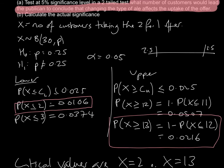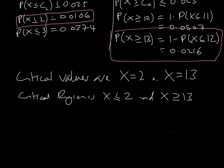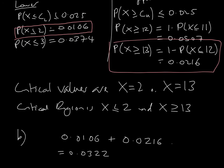To finish off, part B asks us to calculate the actual significance. The actual significance is the probability of rejecting H0. The probability of X less than or equal to 2 is 0.0106, and the probability of X greater than or equal to 13 is 0.0216. Adding those two together gives us 0.0322, which is 3.22%.